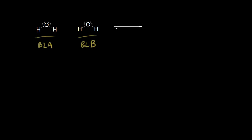A lone pair of electrons on the oxygen takes this proton and leaves these electrons behind. So we're going to form hydronium — we make H₃O⁺. Let me go ahead and draw out H₃O⁺: a lone pair of electrons on this oxygen with a plus one formal charge. These electrons in red are going to take this proton to form this bond here, so we make hydronium.